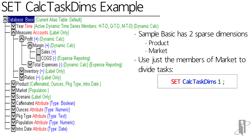And then at the very end, it's going to have to add East to West to South to Central to get total market. So at that point, even if I have 128 CPUs, it's only going to use one of them.